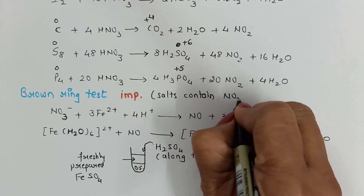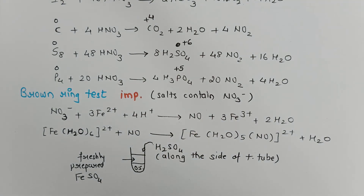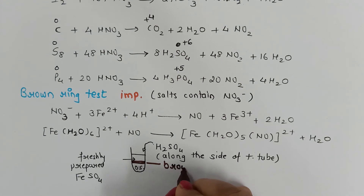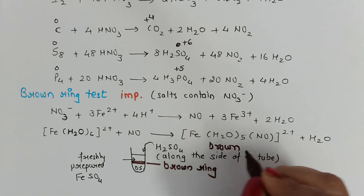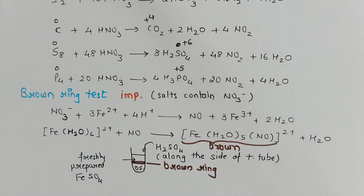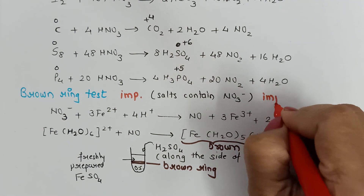The brown ring test is generally done for salts that contain the nitrate anion. When we perform this test, we get a brown colored ring at the junction of the two solutions, hence it is called the brown ring test. This test depends on the ability of Fe2⁺ to reduce nitrate to nitric oxide, which further reacts with Fe2⁺ to form the brown colored complex [Fe(H2O)5NO]²⁺.